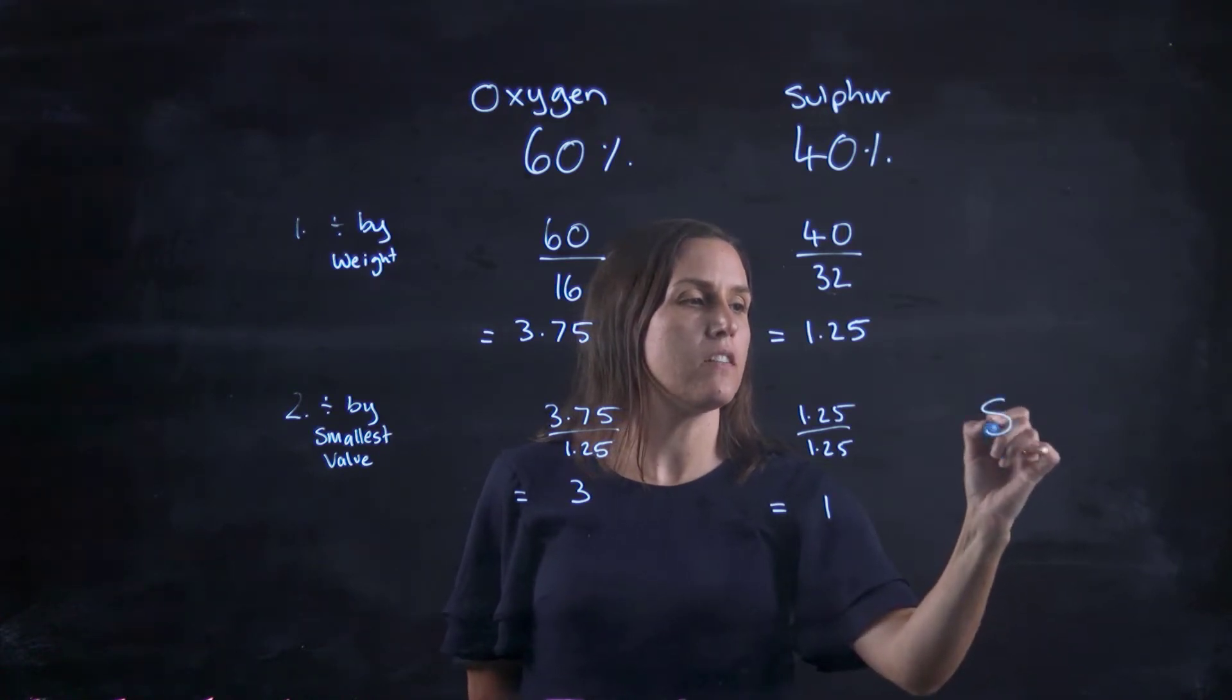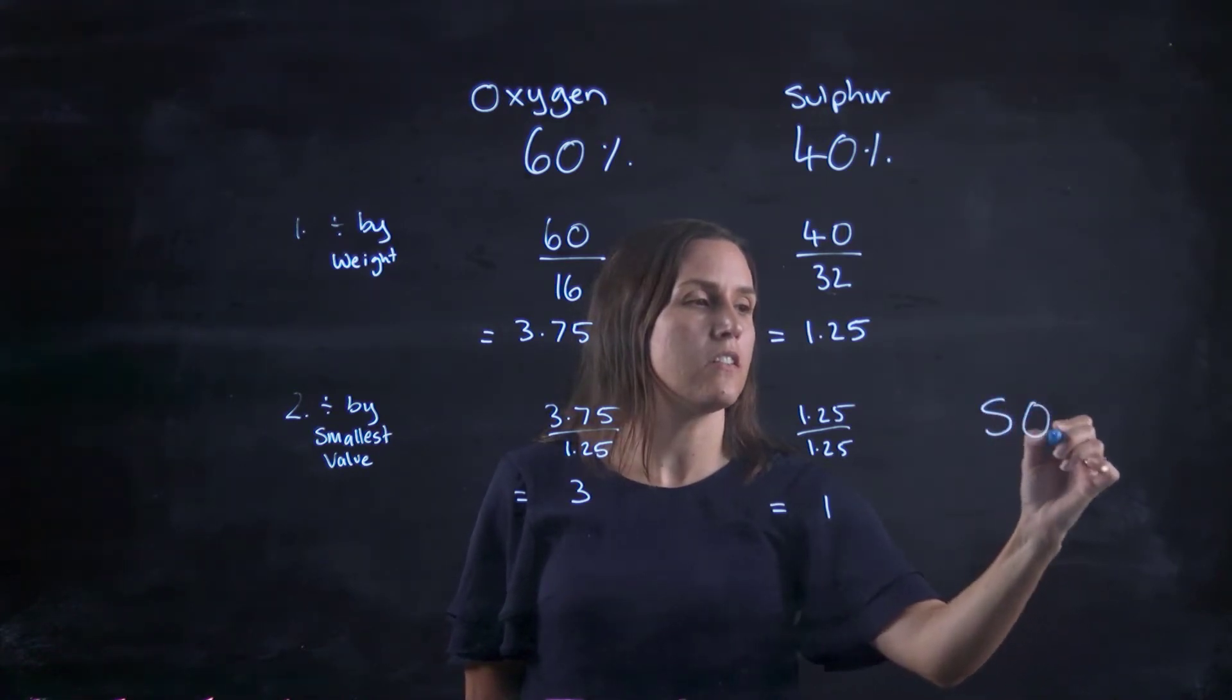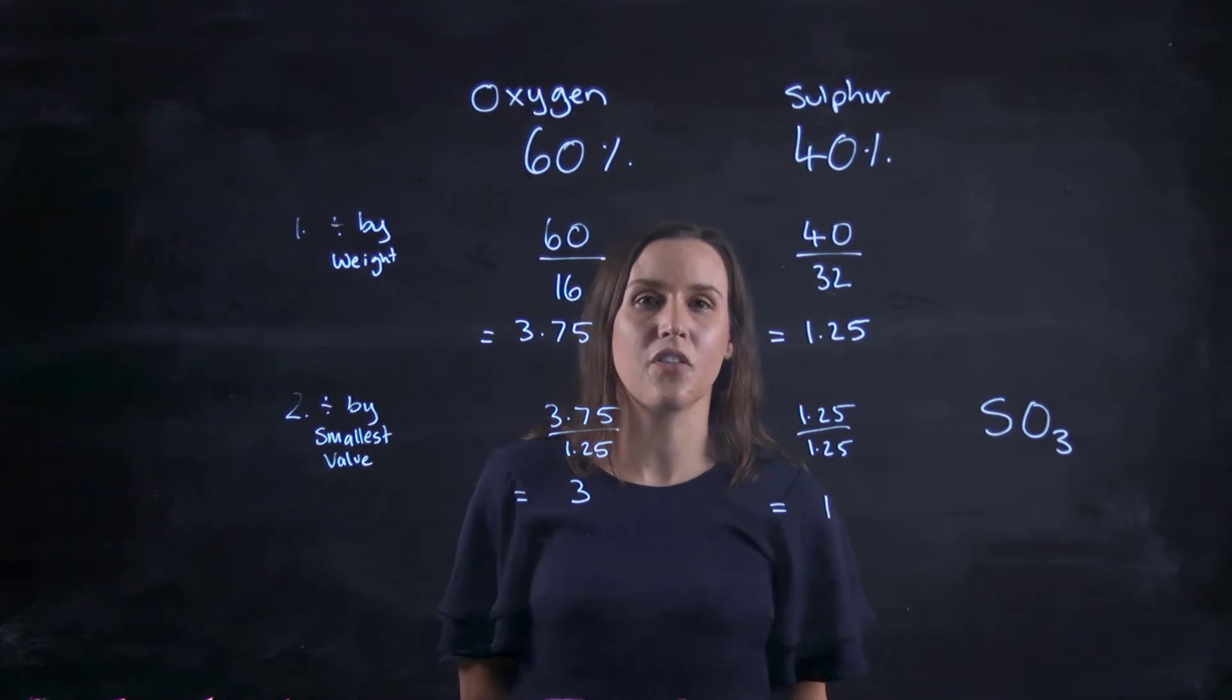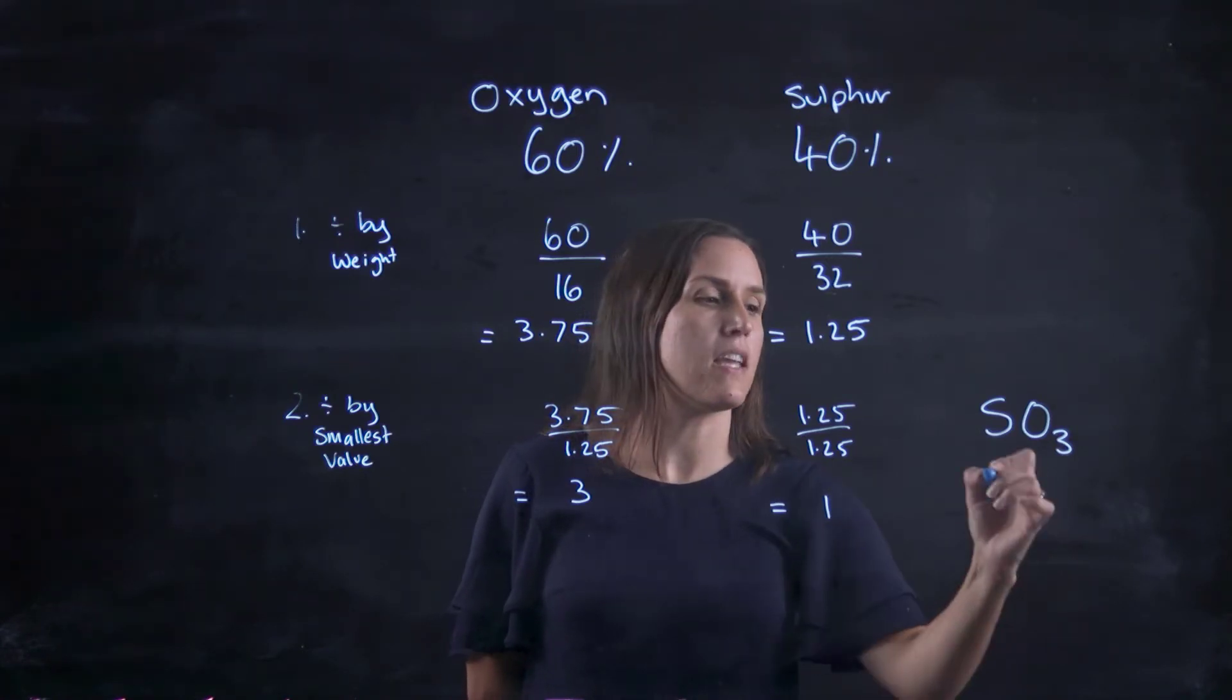So the formula would be sulfur, I've got one of those, and oxygen, I've got three of those. So it's SO3. So that's my empirical.